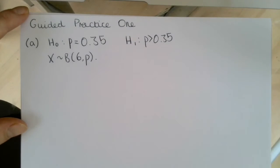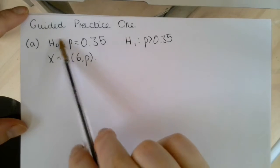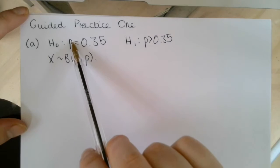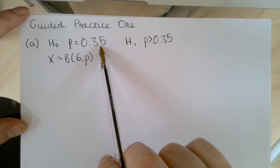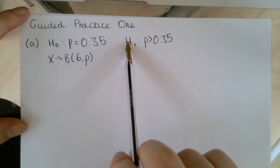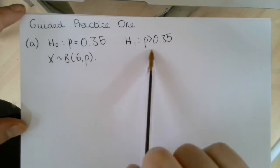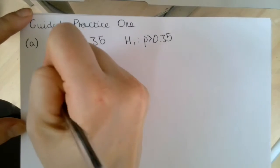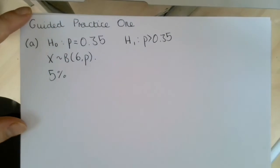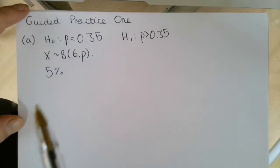It says the observation is used to test H0, our null hypothesis, which is that the parameter is equal to 0.35, against H1, our alternate hypothesis, which is that the parameter is greater than 0.35. So we want to use a 5% significance level to find the critical region for this test.